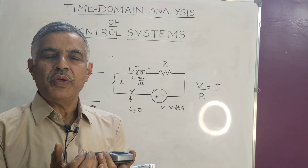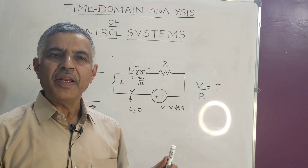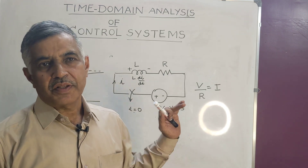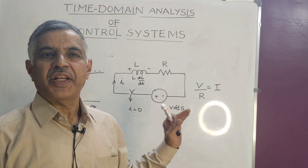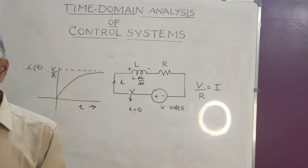So in this class I have explained what is transient response and what is steady state response. The summation of transient response and steady state response makes the total response. I will continue in the next class by considering different types of inputs. Thank you.